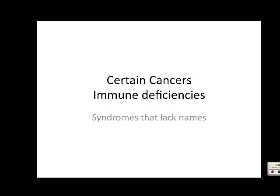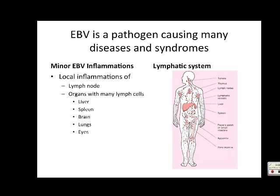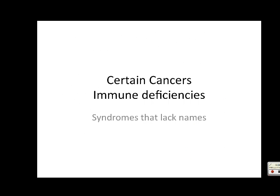EBV causes some very serious diseases - for example, cancer and immune deficiency diseases. This disease picture has to do with killing lymph cells - they become deformed, unable to do their function which is to protect the body. So you get immune deficiency automatically, and you get syndromes that lack names - those are the ones who come to homeopaths a lot.